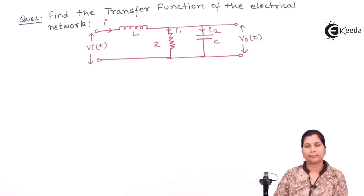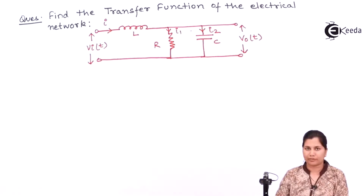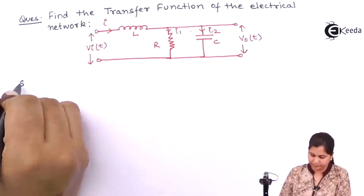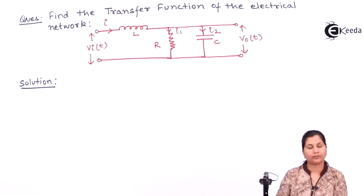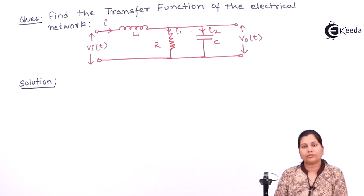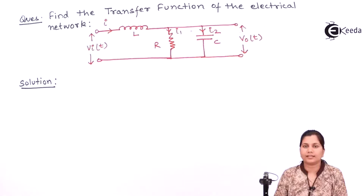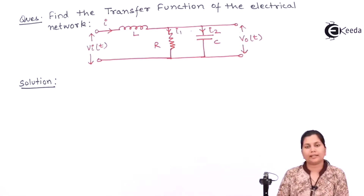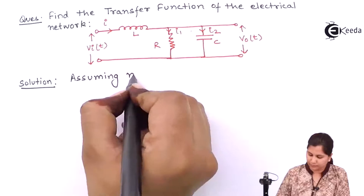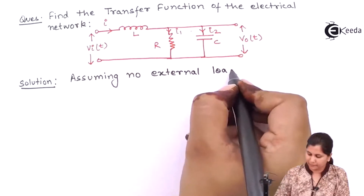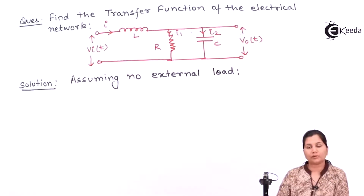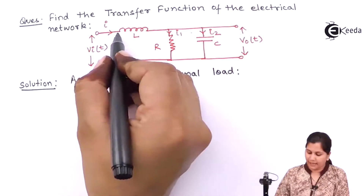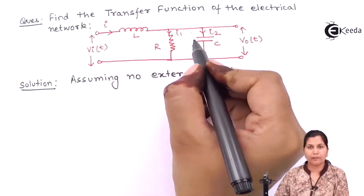This is the circuit diagram and the electrical network for which we have to find the transfer function. In the definition of the transfer function, we have to assume that all the initial conditions are zero. Here we are assuming that there is no external load in the circuit. If there is no external load, then this current I will be equal to I1 plus I2.